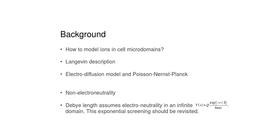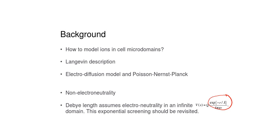The Debye length, by definition, assumes electroneutrality in an infinite domain, so that in the Poisson-Planck equation the exponential term can be linearized. The exponential term obtained this way screens the charge: the classical voltage, which is 1/R, becomes 1/R multiplied by this exponential term that drastically decays depending on lambda. This says that a charge in a medium with other charges, assuming electroneutrality, will have its effect decay exponentially.